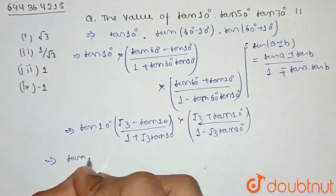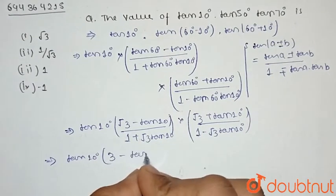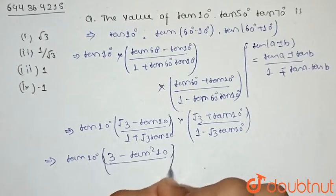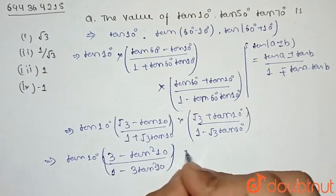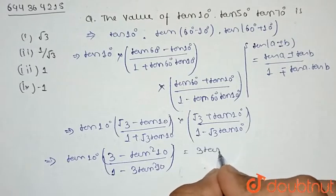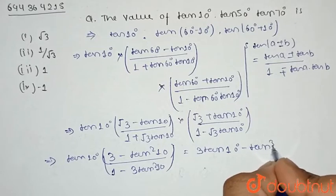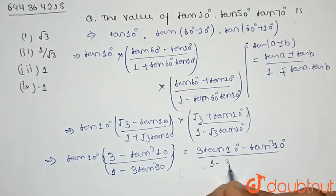Cross multiplying and simplifying inside the bracket, we have (3tan10° - tan³10°) / (1 - 3tan²10°).